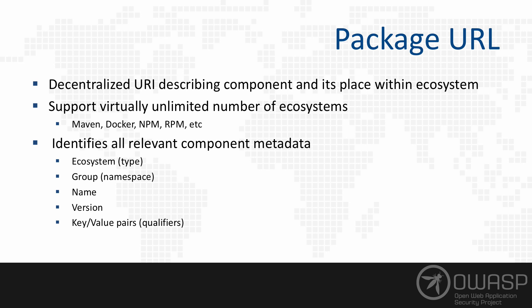Some of the things you can describe with package URL are the ecosystem type and the grouping. Not all ecosystems have grouping — for example, in the Java world the group ID is a requirement, but in NPM the organization is optional. So not all components have a group, but they all have a name and they all have a version, although version is not strictly required by the pURL spec. You also have optional classifiers or qualifiers, which are simply key-value pairs appended to the end of the URL after the question mark.